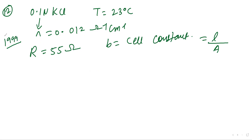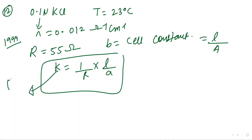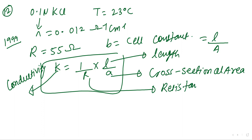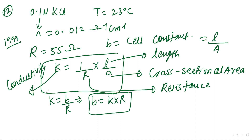How will you solve? The formula is K = (1/R) × (L/A). K is conductivity, L is your length, A is your cross-sectional area, and R is resistance. This can be reduced: L/A can be written as B/R, so B equals K into R. This is also an important formula — please remember it.